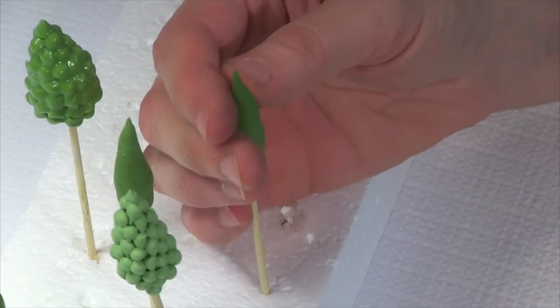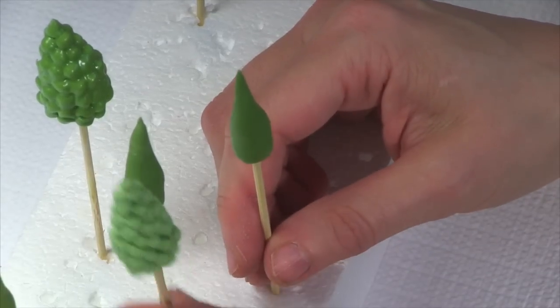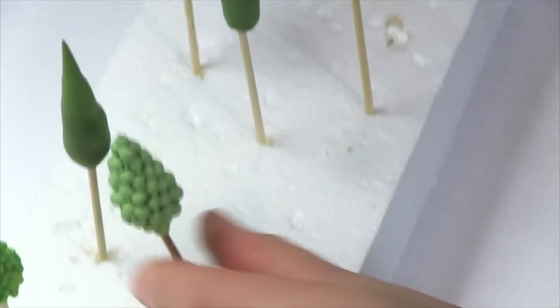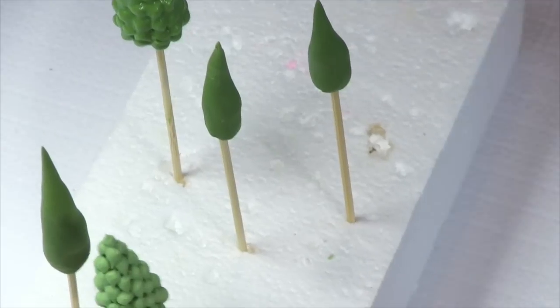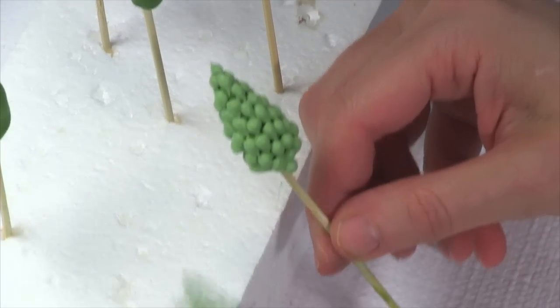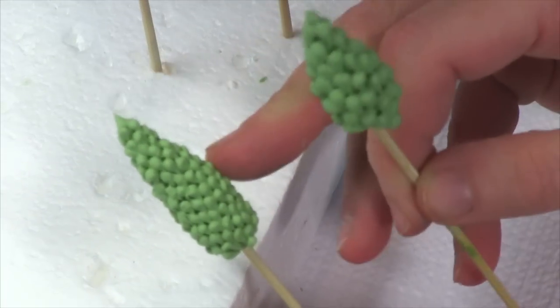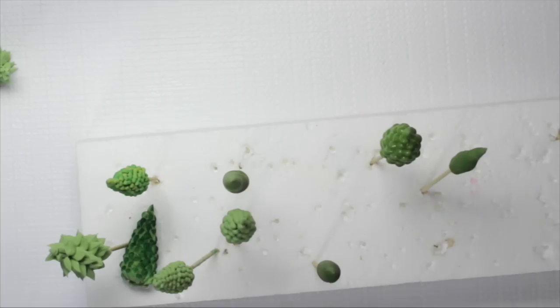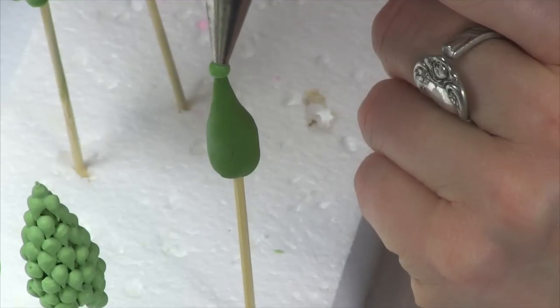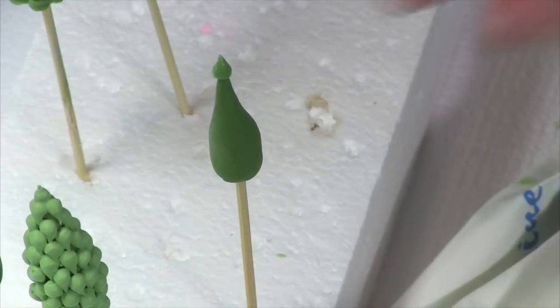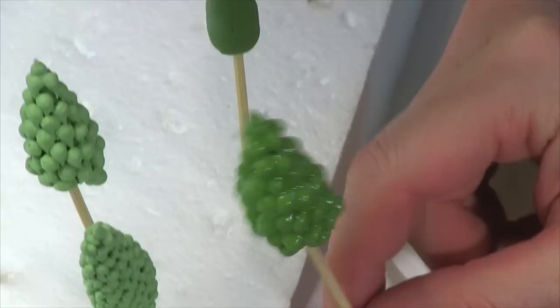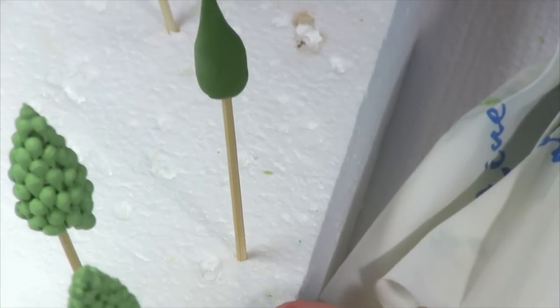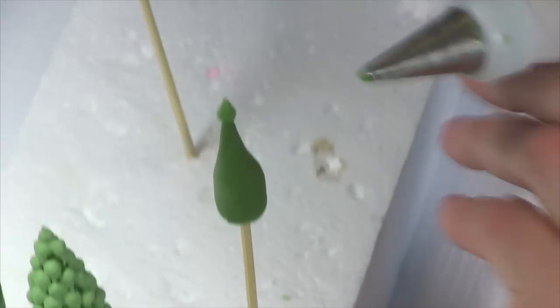I'm going to start with the Mediterranean Cypress. For that, I'm using a number five round tip for this coarse texture. If you want a finer Cypress tree, the one on the left here uses a number four round tip. My first step is to just pipe a little point on the top with very thick royal icing. Here I piped a tree earlier with slightly less thick icing and you see how the leaves all ran into each other. So be sure your icing is really thick.